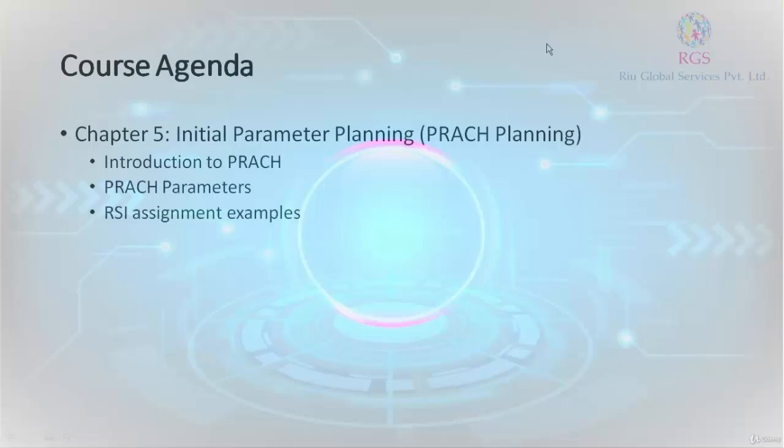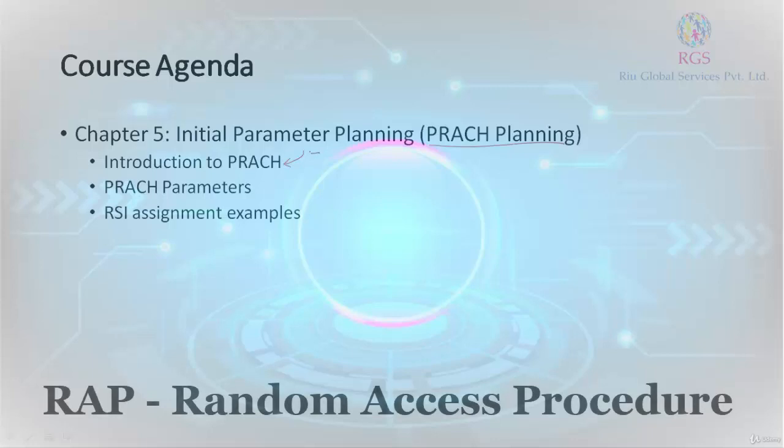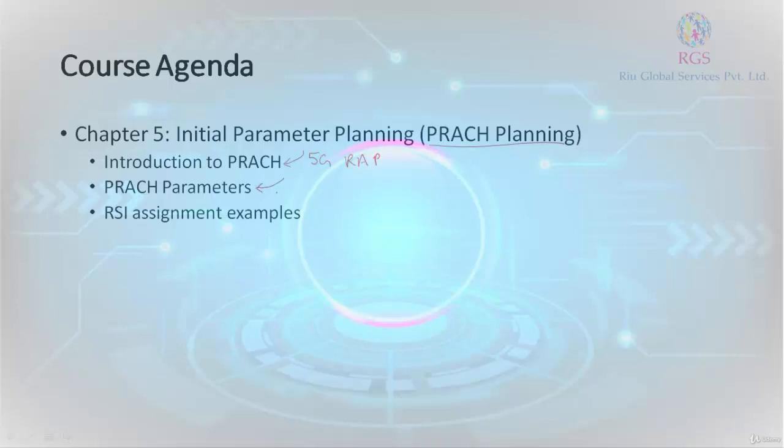Hi and welcome to the last chapter of our 5G radio planning course. In this chapter we are going to discuss the initial parameter planning for performing PRACH planning. We will give you an introduction of the random access procedure in 5G, then describe some important PRACH parameters, and with the help of an example explain how root sequence index planning is done using any planning tool. Let's get started.